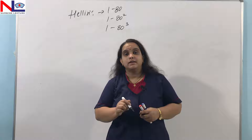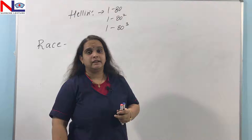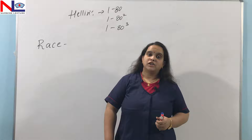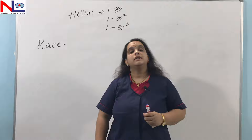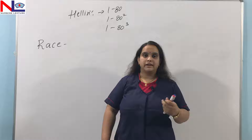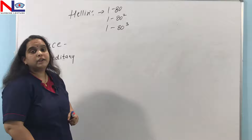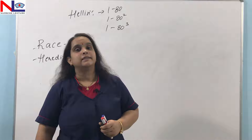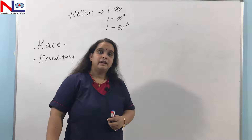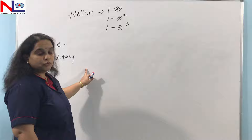Dizygotic twinning varies from country to country and depends on many factors. One factor is race: in Black individuals (negroes), the incidence is higher than in Caucasians because their FSH levels are higher, causing more follicles to mature and be released simultaneously. Another factor is heredity: if a woman was herself born from a dizygotic birth, there is a higher chance she will give birth to dizygotic twins compared to a woman born from a singleton pregnancy.